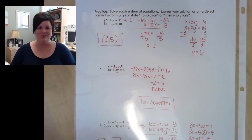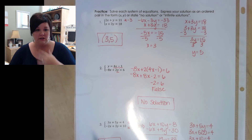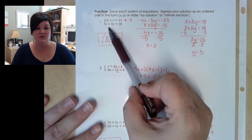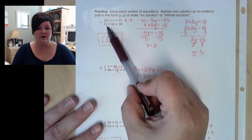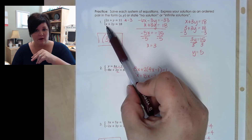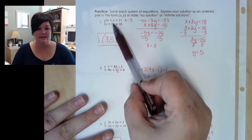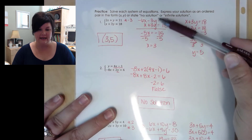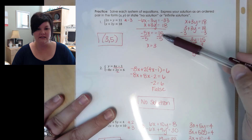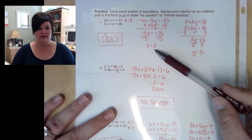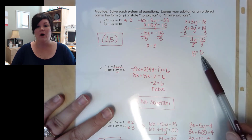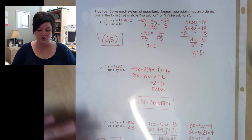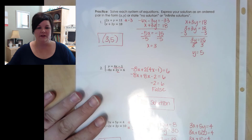Going over the practice problems: on number 1, I used elimination because the y terms were easy to make opposites. Multiplying the top equation by negative 3 made the y terms cancel, leaving negative 5x equals negative 15. Dividing by negative 5 gives x equals 3. If you cleared the x terms instead, you'd have solved for y equals 5 first. Either way, the solution point for number 1 is (3, 5).